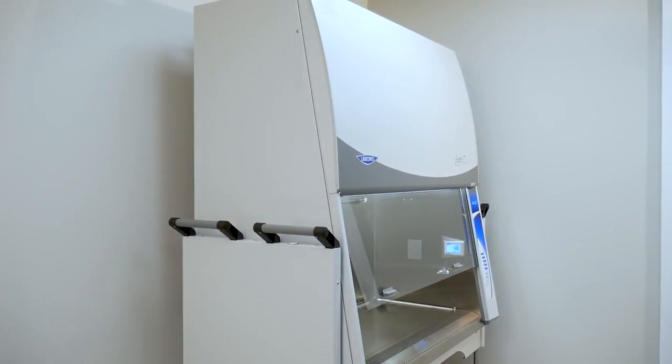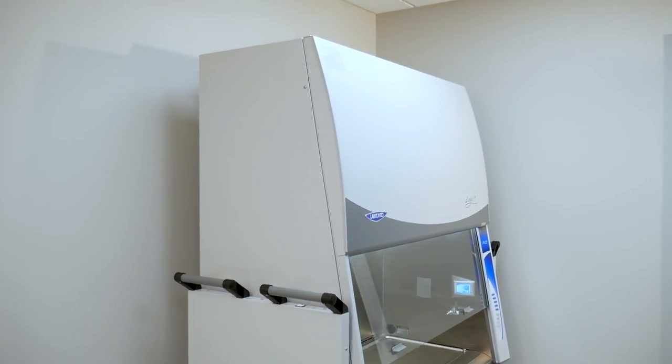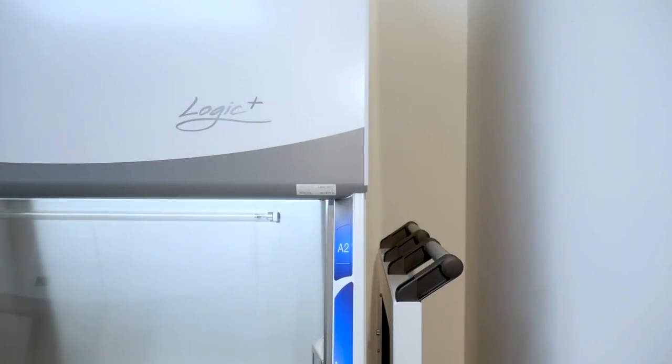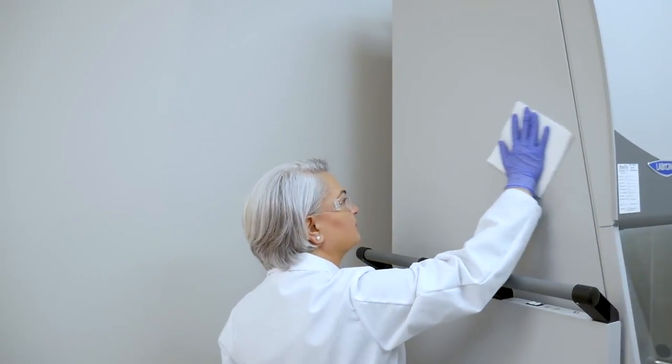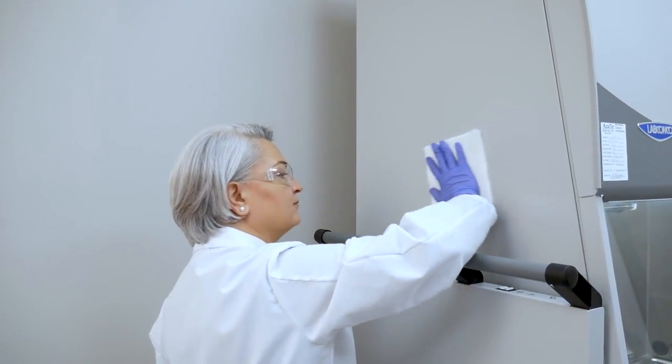A BSC should also be installed with six inches of clearance around the top, sides and back to avoid restriction of airflow entering and exiting the cabinet, and to allow for easy cleaning of the exterior.